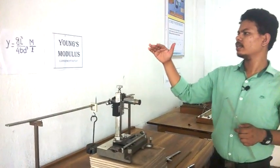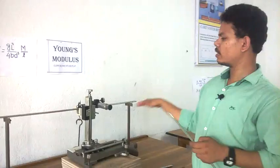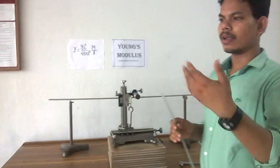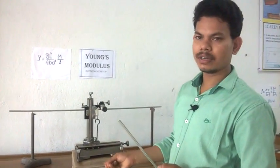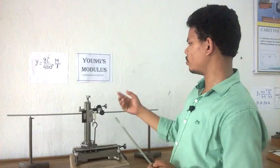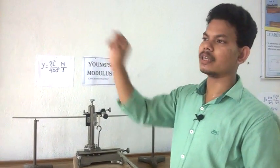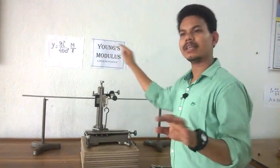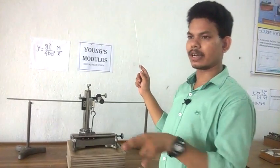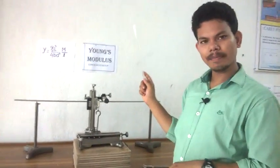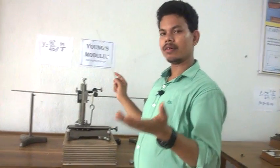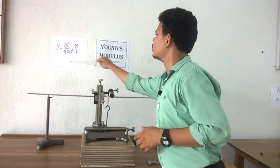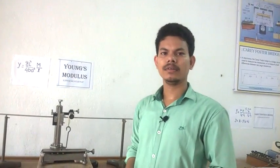So clearly we can say that if the no-load position has a value x₀, and for 0.5 kg is x₁, next is x₂ or x₃, then obviously the depression is x₀ minus x₁, x₀ minus x₂, x₀ minus x₃. So finally we can find different δ values and just plot it and find the slope. Slope gives δ/m. So from the value of slope, we can put one by slope as the value of m/δ, and putting this value into the formula, we can calculate Young's Modulus.